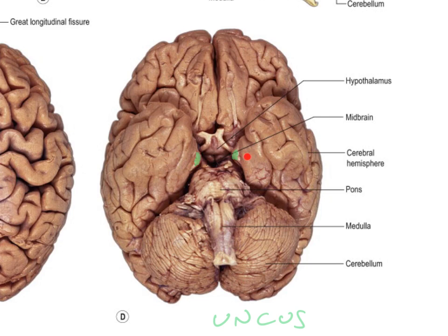It's important that you understand the relation between the uncus of the temporal lobe and the midbrain at this level. Sitting just lateral to the uncus, in roughly this region here, we have the so-called parahippocampal gyrus, and it is within here, deep to this region, that we find the hippocampus - a structure which is really important in the formation of memories.